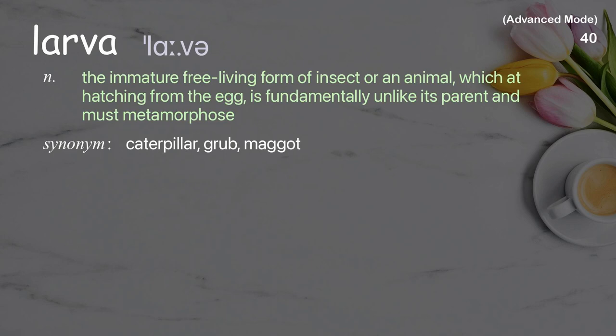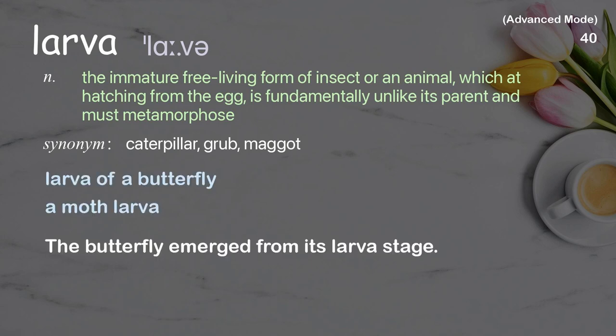Larva: The immature free-living form of an insect or an animal, which has hatched from the egg and is fundamentally unlike its parent and must metamorphose. Examples: larva of a butterfly, a moth larva. The butterfly emerged from its larva stage.